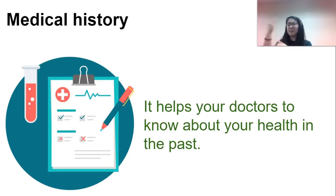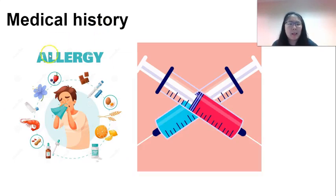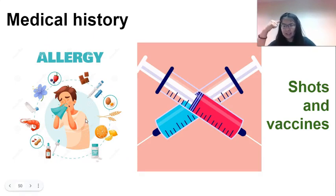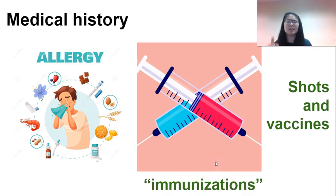Your medical history — 'history' means in the past. Your doctor's office should know everything you remember about your medical history; it helps them know about your health in the past. This includes allergies, but also any shots and vaccines you remember — like flu shots or chicken pox shots. This is also called immunizations. 'I am immune — I cannot get sick from this anymore.' So immunization history means shots and vaccines.